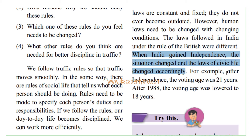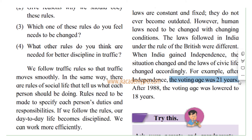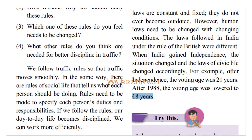Another example: after independence, the voting age was 21 years, meaning only people 21 and above could vote in elections. But after 1988, the voting age was lowered from 21 to 18 years of age — anyone who is 18 years and above can now vote. Before that, a 19-year-old or 18-year-old could not vote, but after 1988, all those who are 18 years and above can vote.